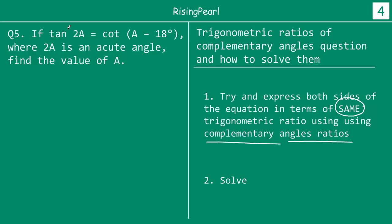So what does that mean? If we have tan of some angle equals cot of some angle, our goal is to get both left-hand side and right-hand side expressed in terms of the same ratio — tan, cot, sin, cos, cosec, or sec — depending on what ratios are given. Now, one important thing: 2A is given as an acute angle. In complementary angles, both angles must each be less than 90°, i.e., both must be acute angles.